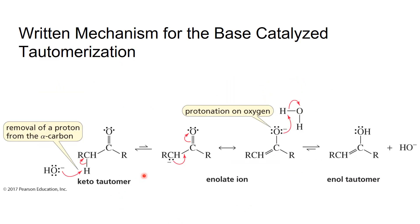We can also do this with a base. Here is the written mechanism for the base-catalyzed tautomerization. The base abstracts the hydrogen from the acidic alpha carbon. Those electrons then move to the bond between the carbons, forming a new double bond, while the electrons kick up to the oxygen because it's more electronegative. That gives us a negatively charged oxygen and a new C=C double bond.